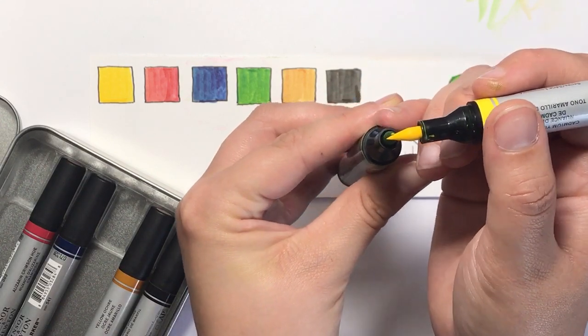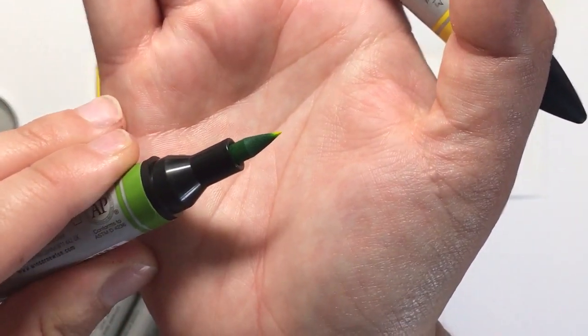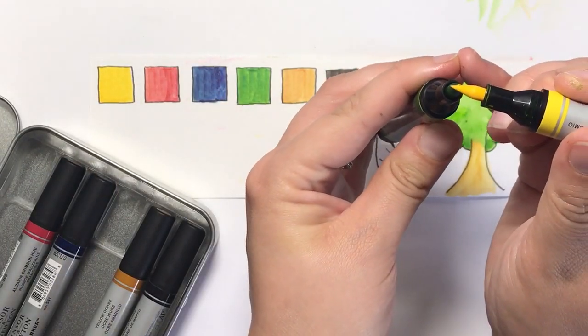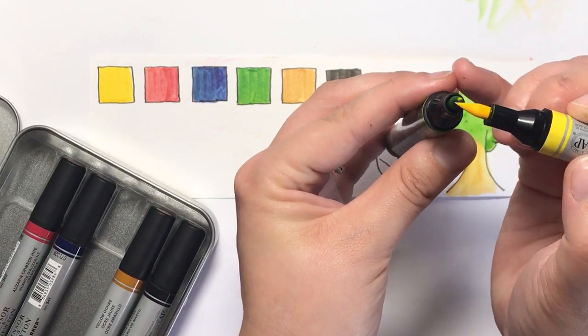We'll just leave this on here for a second and hopefully you can see that the end of the green is turning yellow. That's just soaking up some of the ink and it's not affecting the pens. They're going to go straight back to their normal colours.